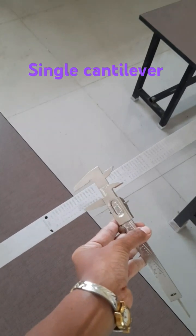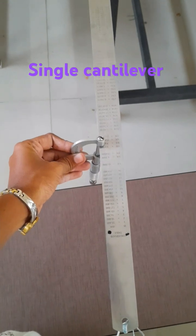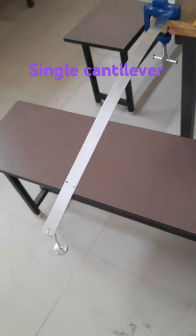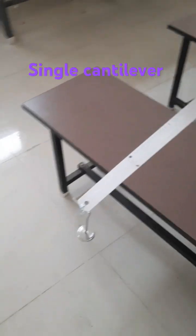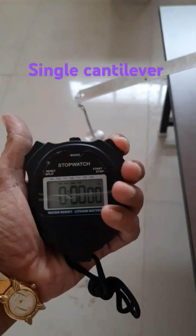Measure the thickness using screw gauge. Put the weight in the weight hanger and time for ten oscillations.